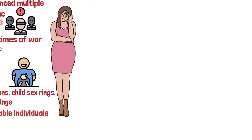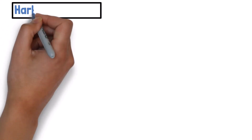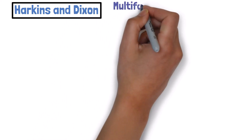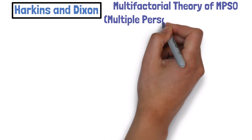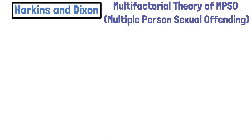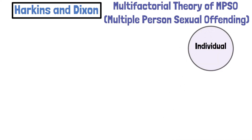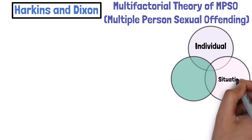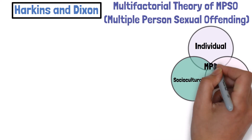To gain a better understanding of the factors that promote multiple perpetrator sexual offending, researchers Harkins and Dixon developed the multi-factorial theory of multiple person sexual offending, or MPSO. As you can see in the visual, there are three areas — individual, situational, and social-cultural — that make up the multiple person sexual offending theory.